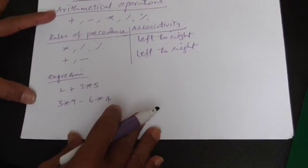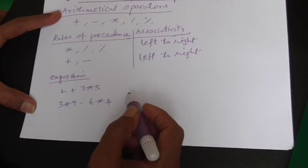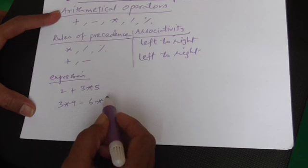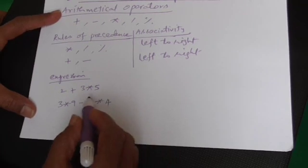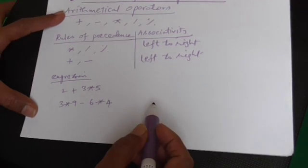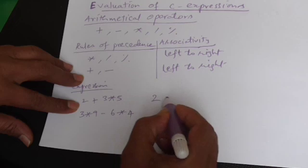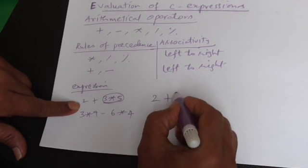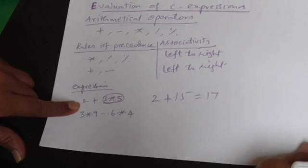For example, if I have an expression like 2 plus 3 into 5, even our normal mathematics says, normal mathematical rule says you do the multiplication first. But coming to computer science, it is slightly different. I will explain. Coming to this 2 plus 3 into 5, in mathematics also we write, if we evaluate this multiplication first, then only we will go for addition. So the answer is 17.